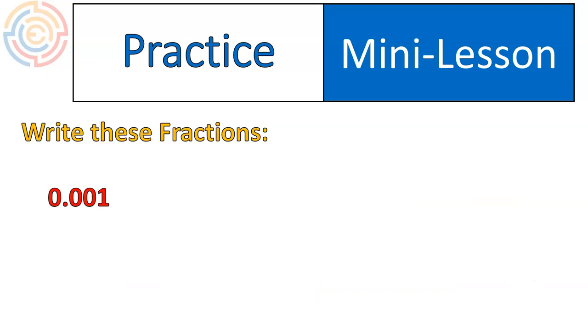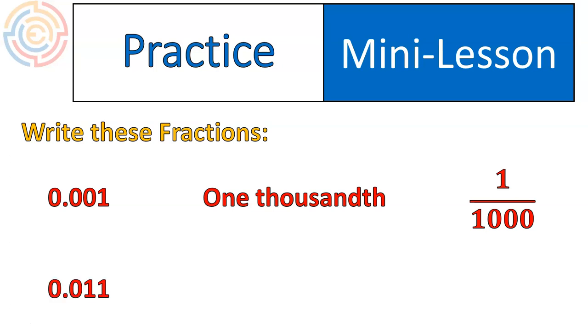We're going to move on to thousandths. This one is in the thousandths column, so we would call it one-thousandth, and write it as one over one-thousand as a fraction. So go ahead and try this one out. It's a little bit complicated, but I'm sure you can do it. Remember, the last digit is in the thousandths column, so it will be a fraction out of a thousand. How many out of a thousand?